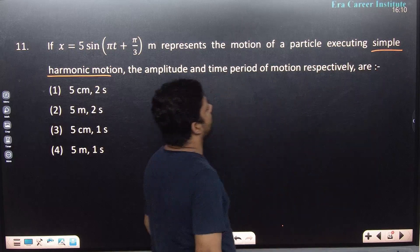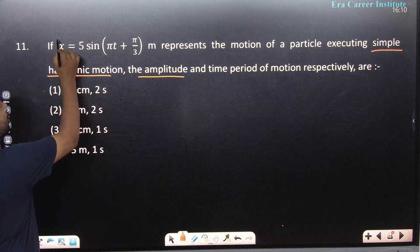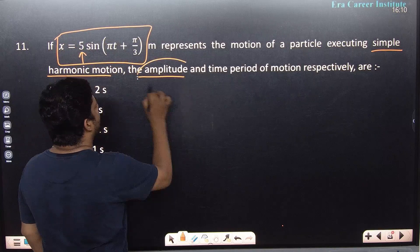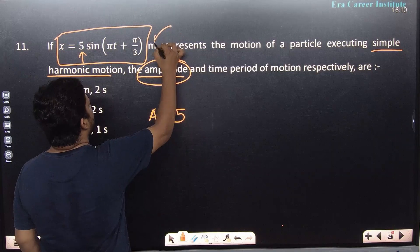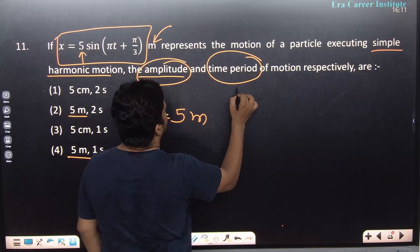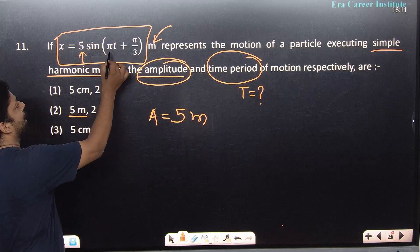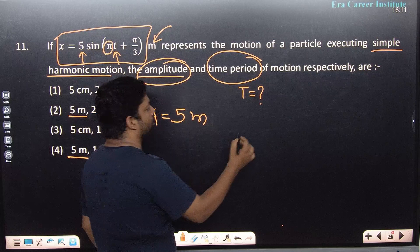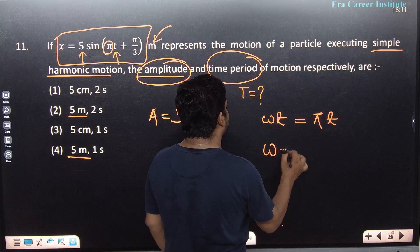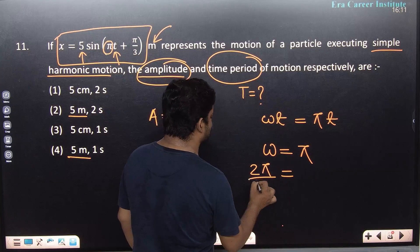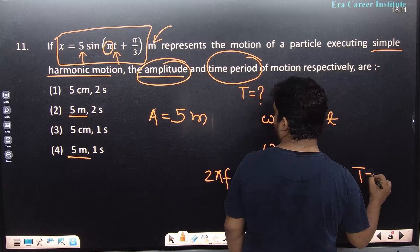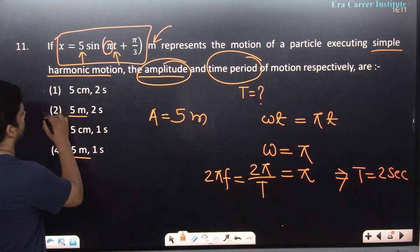Question 11 is from SHM — very basic. For a sinusoidal function, the amplitude is the coefficient multiplied with sine. So amplitude A = 5 meters. For time period: the standard equation has ωt format. Here ωt = πt, so ω = π. Since ω = 2π/T, solving gives T = 2 seconds. Answer is the second option.